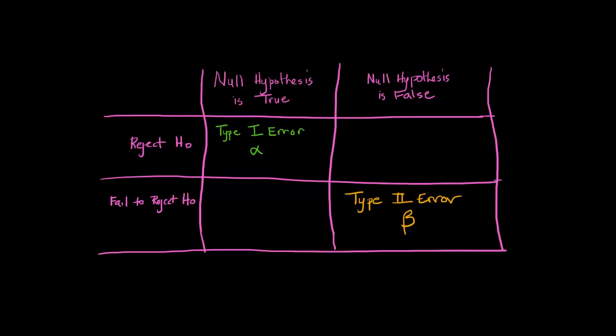Type 2 error or beta is when the null hypothesis was false but we didn't catch it. We failed to reject it. So that's another way we can make an error.